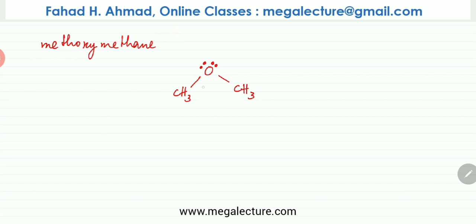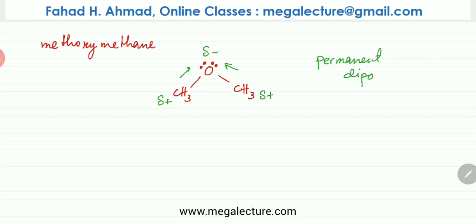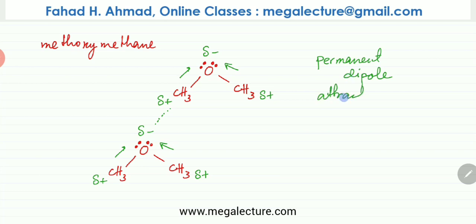The last molecule is methoxymethane, where you have a methyl group bonded to oxygen on each side — it's a bent molecule. Oxygen, being highly electronegative, pulls electrons closer to it, so oxygen has a partial negative charge, while the rest of the carbon chain has a slight positive charge. This results in permanent dipole attraction between methoxymethane molecules — the negative side of one molecule is attracted to the positive side of another. Plus, Van der Waals forces with temporary dipole induced dipole attraction are always present.